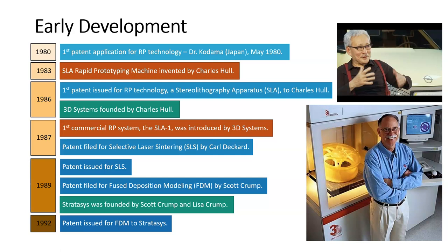Three years later in 1983, Charles Hull, another pioneer, developed a machine for SLA — stereolithography — rapid prototyping. In 1986, the first patent was issued for stereolithography apparatus to Charles Hull, and he also founded 3D Systems that year, which is still around today and was really the first 3D printing company.